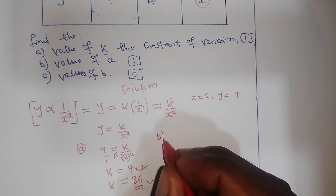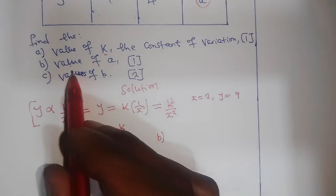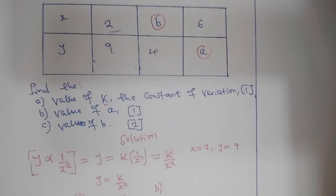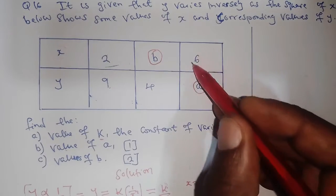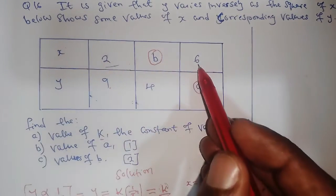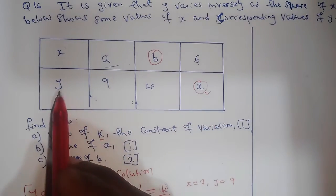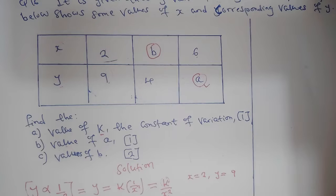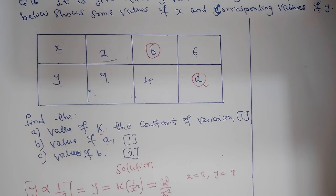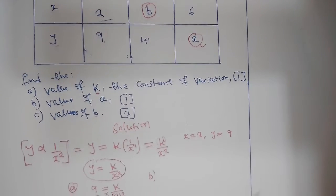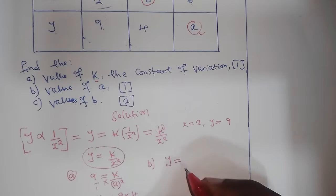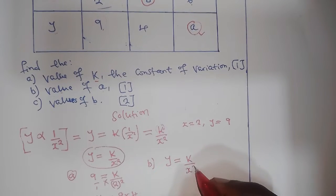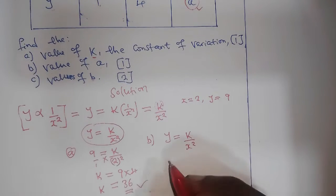For part b, we find the value of a. Going back to the table, a represents y and the corresponding x value is 6. We use the same equation: y = k/x².